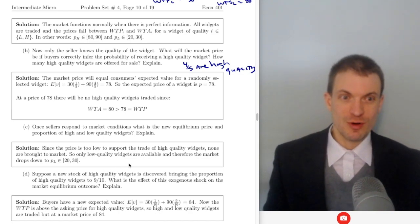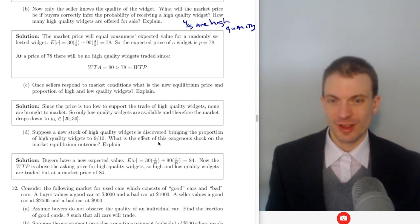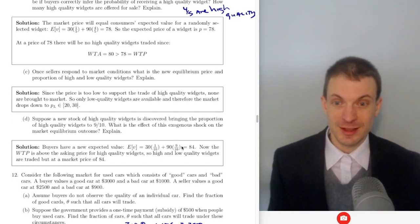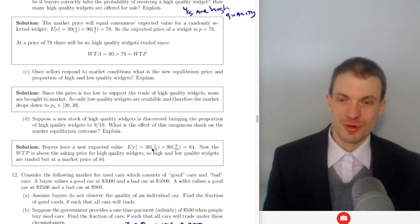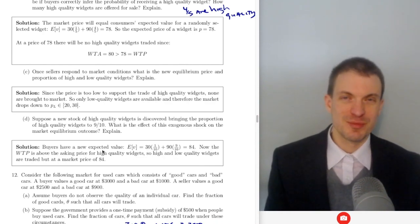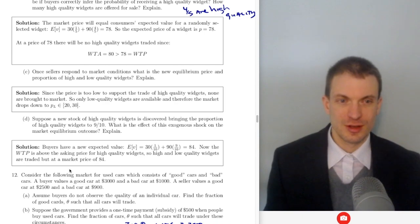Now suppose even more high quality widgets are found, so that 90% of them are good. What's the effect of this shock on the market equilibrium? Buyer's valuation is 90% of $90 plus 10% of $30, giving $84. Now the willingness to pay is above the high quality asking price, so both high and low quality widgets are traded at a price of $84.